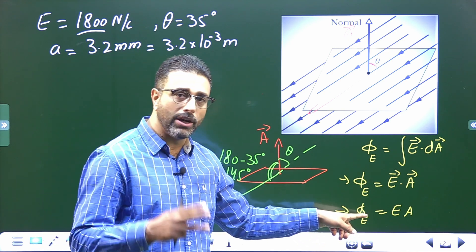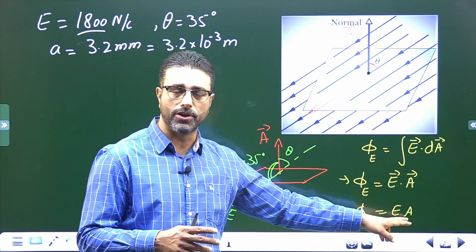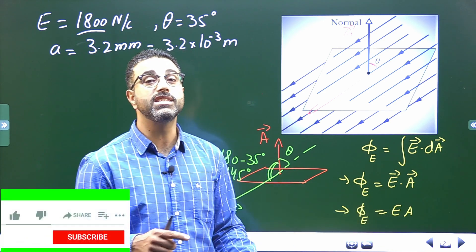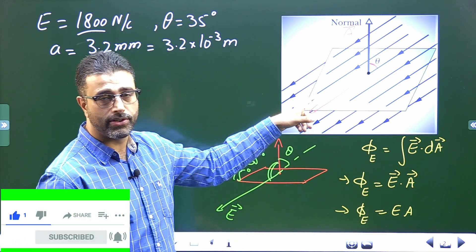Then for this one, we have three conditions: electric field must be uniform, surface must be plain, and field lines must be crossing the surface normally. That is not the case here.